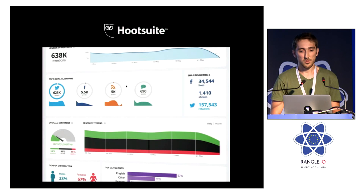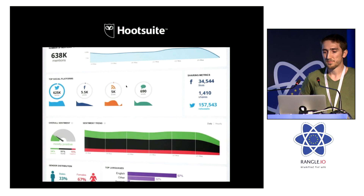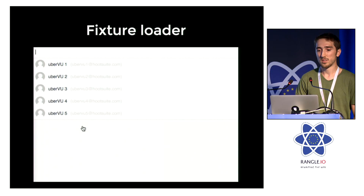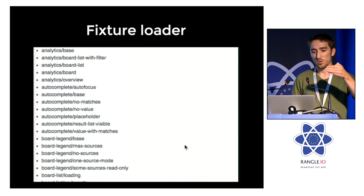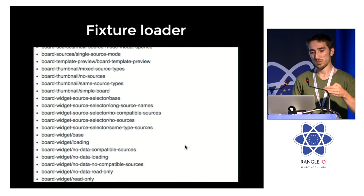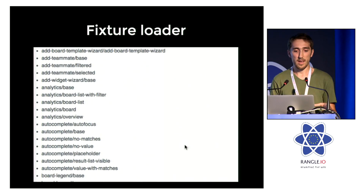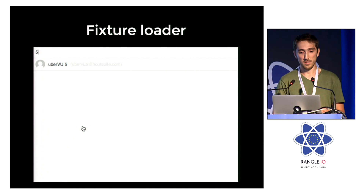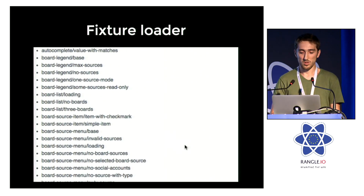Luckily, my bosses at Hootsuite allowed me to rewrite the UI completely using React, so Cosmos became used by an entire team on an actual project. The first thing we did with it was build a fixture loader that would list all the components we had created and all the fixtures we had created for them, giving you an overview of the entire app. With one click, you could easily open a component with a given fixture and reproduce a state that you had marked previously.